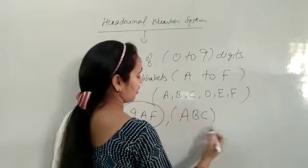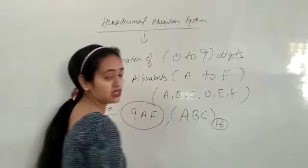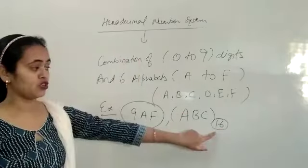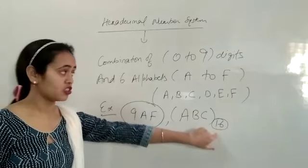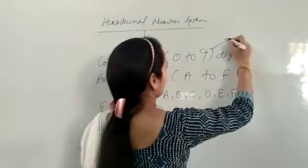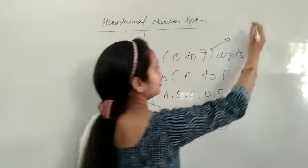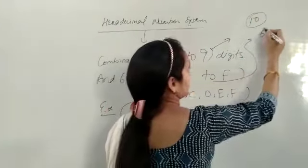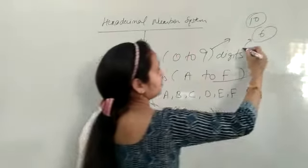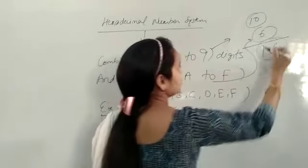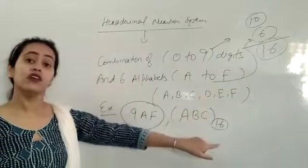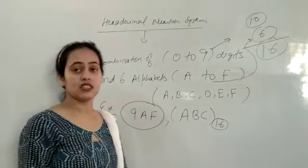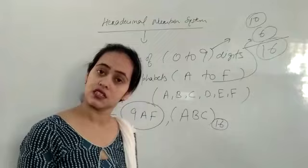And the base of hexadecimal number is 16. Why the 16? As you know very well, 0 to 9, total digits are 10. And A to F, total alphabets are 6. And if we add 10 and 6, total is 16. Therefore, the base is 16.